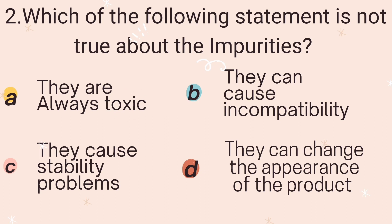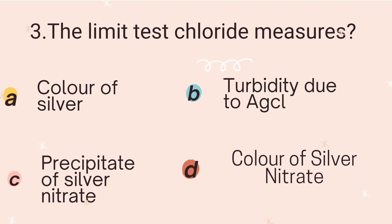Third question: How does the limit test for chloride measure? Option A is color of silver, Option B is turbidity due to silver chloride, Option C is precipitate of silver nitrate, and Option D is color of silver nitrate. The correct answer is Option B — turbidity due to silver chloride. We compare the turbidity of the sample with the standard; if the turbidity is less, the chloride impurity level is acceptable.